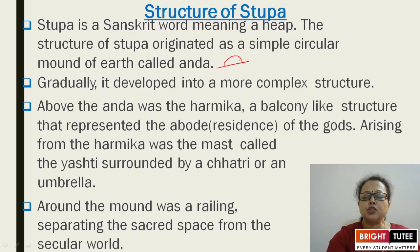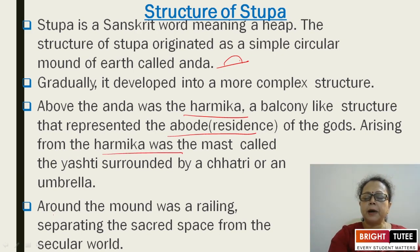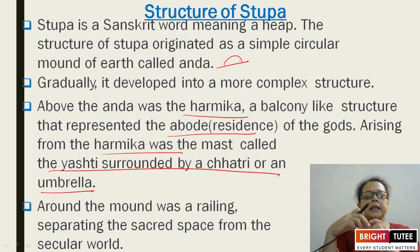Gradually, it developed into a more complex structure. With improvement in architecture, it was developed in a more complex way. Above the Anda was the Harmika — a balcony-like structure that represented the abode, meaning the residence of the gods.